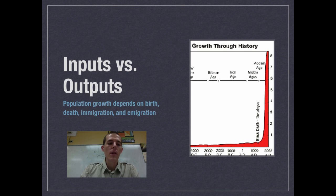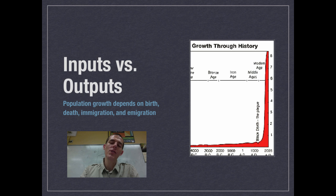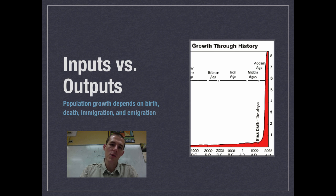The first thing I want to talk about is a basic way of calculating population growth. The growth of a population depends on a couple of specific factors: the number of births — obviously, babies born increase the population — deaths, which decrease the population, and then immigration with an 'I,' which is people moving into an area, and emigration with an 'E,' which is people moving out. If a country has more births and immigration, it's going to grow. If it has more deaths and emigration, it's going to shrink.